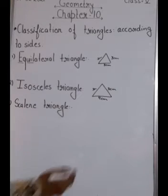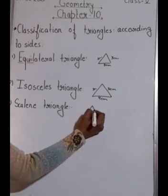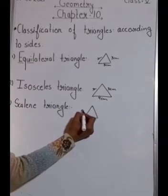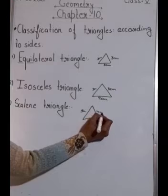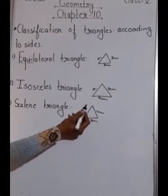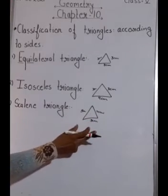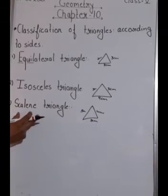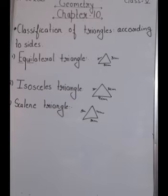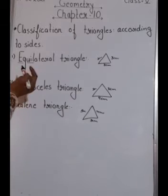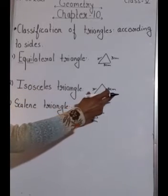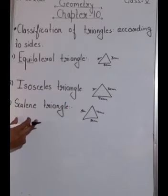Next is the scalene triangle. If I draw a triangle where one side is five centimetres, another is four centimetres, and the third is three centimetres, all three sides are different. So if all sides are different, the triangle is called a scalene triangle. To summarise: equilateral means all three sides are equal; isosceles means any two sides are equal; scalene means no side is equal.